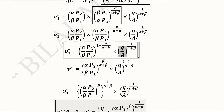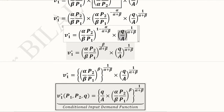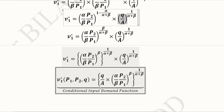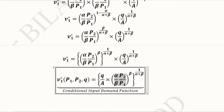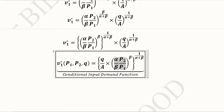The other term is retained as is. We then distribute the power: beta is inside and 1 over alpha plus beta is outside, so the two powers are multiplied. Writing it this way allows us to club together the relevant terms under the whole power of 1 over alpha plus beta, while beta remains exclusive to its own term. We have now developed the conditional input demand function for V1 as well, because it depends not only on input prices P1 and P2 but also on the certain level of output Q.